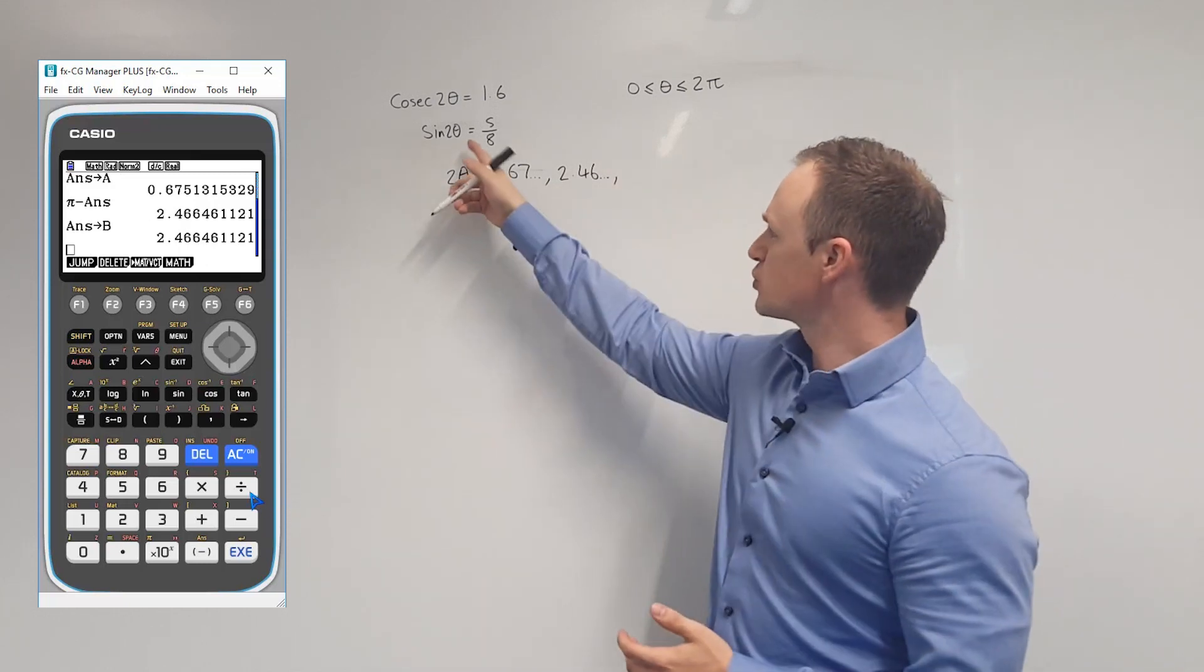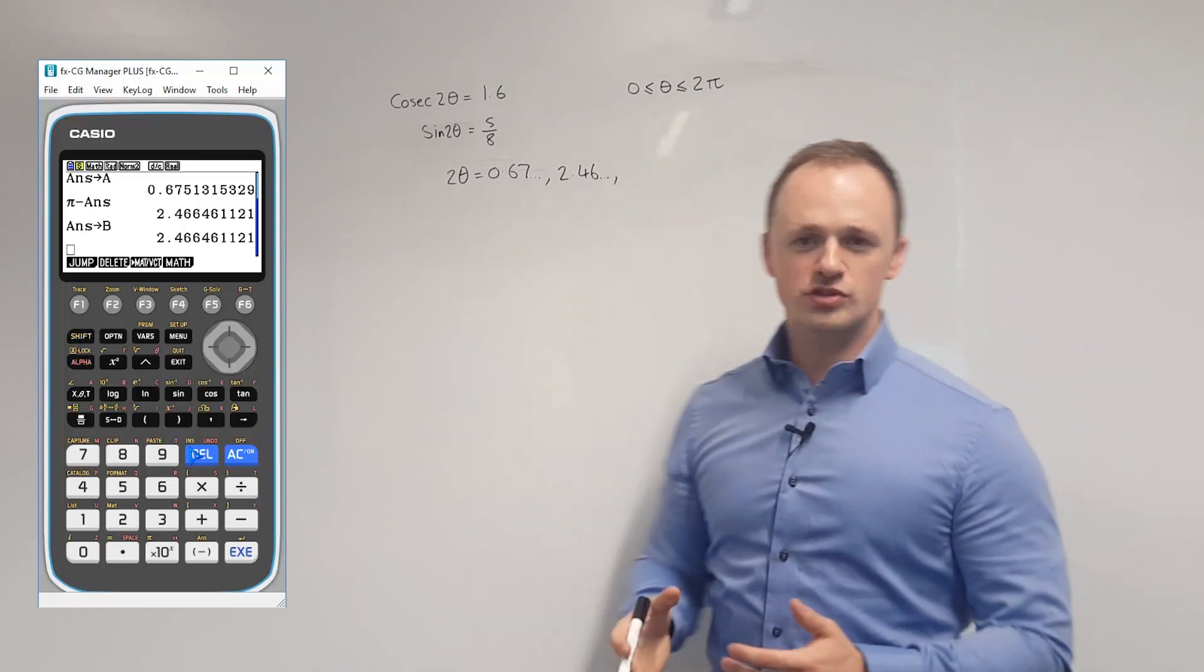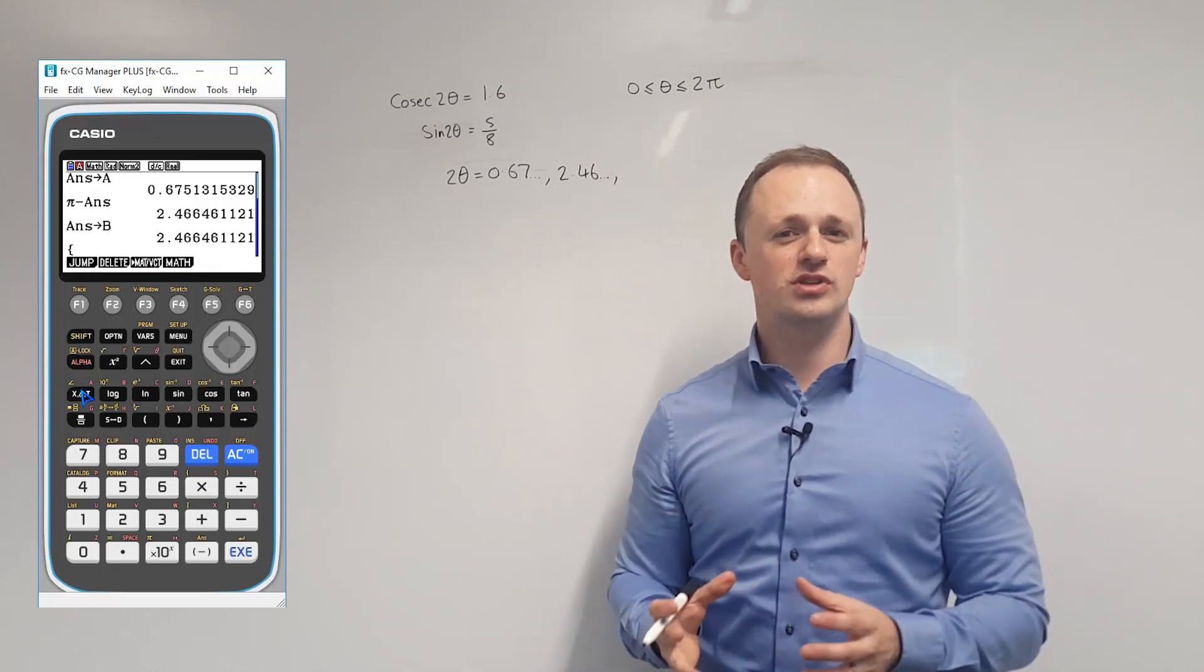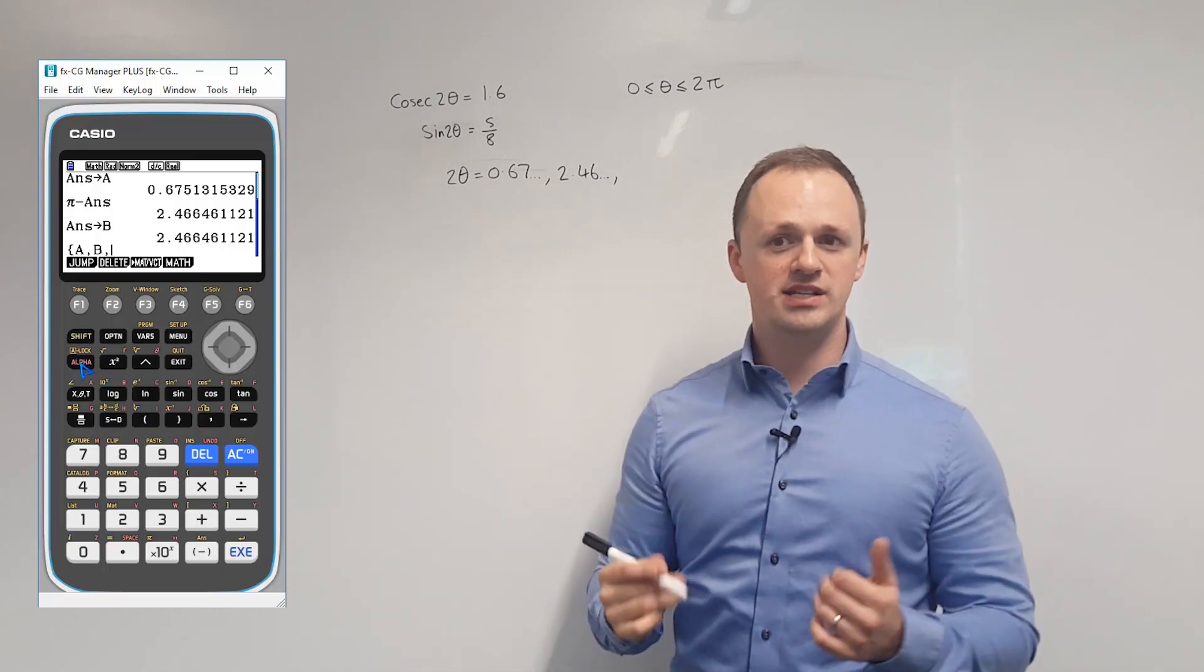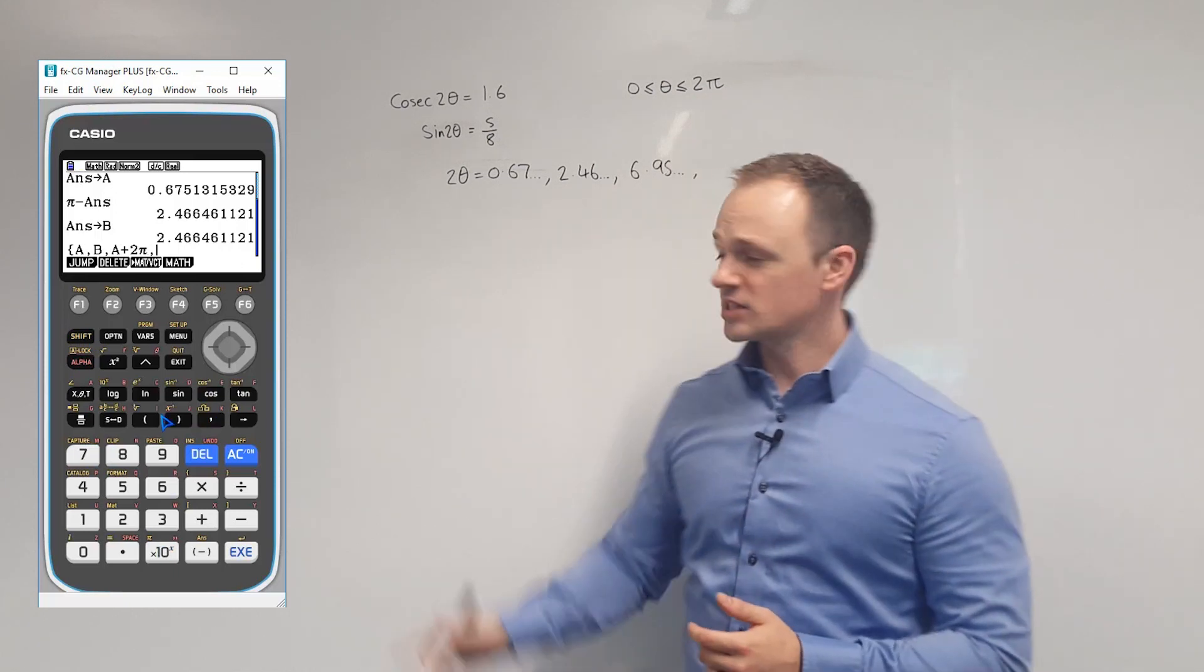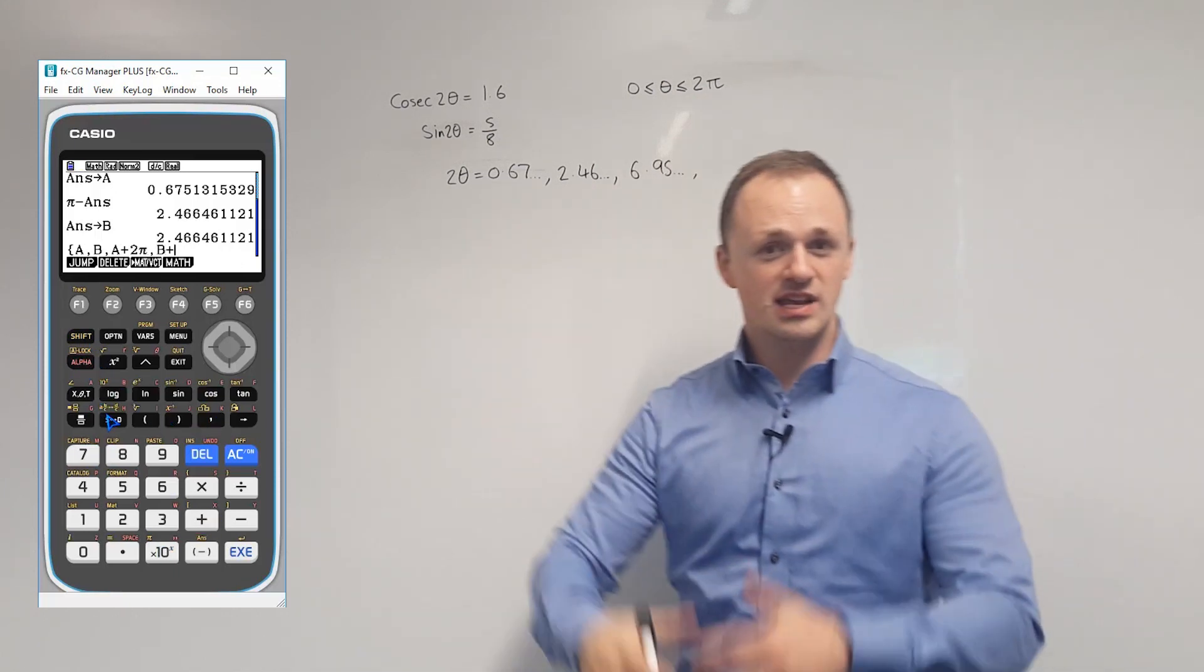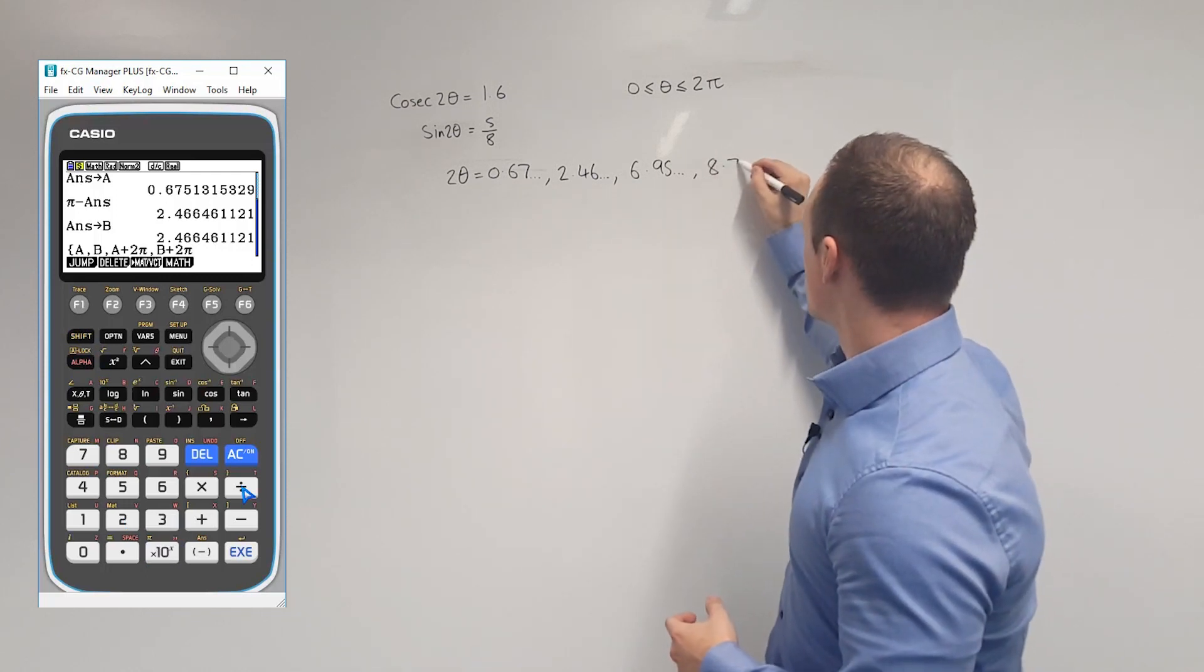From here, again, the same as last time, we solved an equation involving sine 2θ. This time, the region is 0 to 2π. But again, we would expect four solutions. So we're going to take the first one and add a multiple of 2π to that. That will give us 6.95. And then we're going to take the second solution, the 2.46, add a multiple of 2π to that. That's going to give us 8.74.